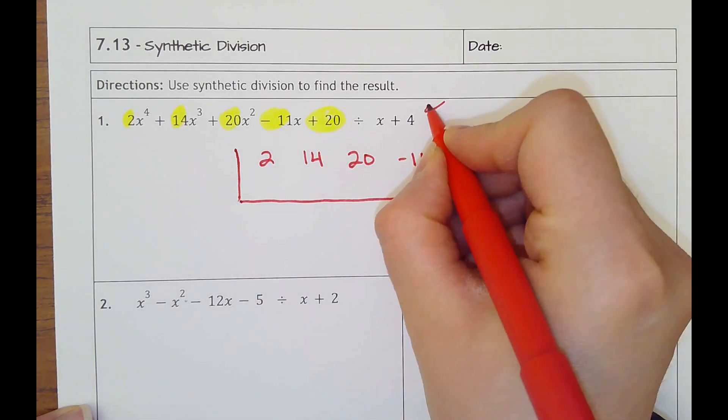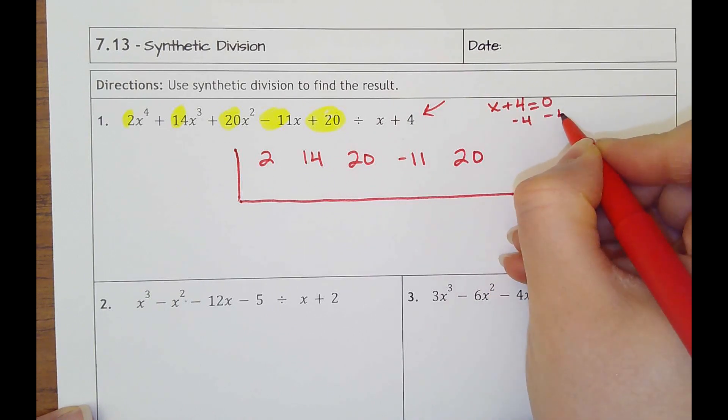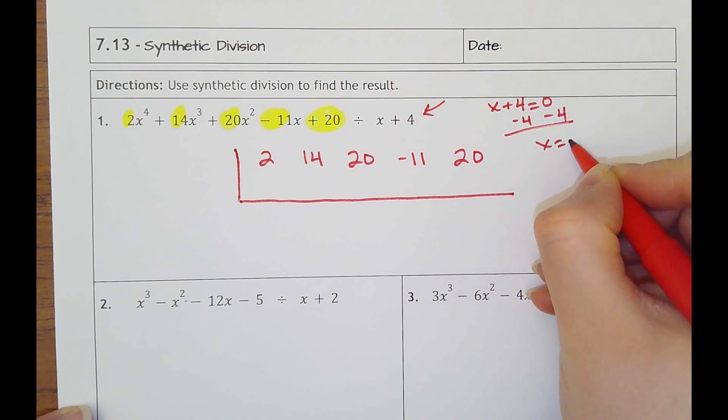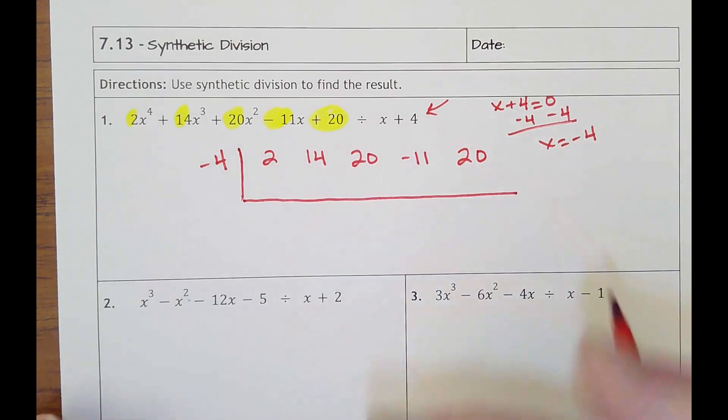Then the number that goes outside of here is going to be the answer to this factor. So thinking of x plus 4 equals 0, subtract 4, so x is negative 4, right? Same thing we knew before - the answer to this is actually the opposite sign, that's what we're dividing by.